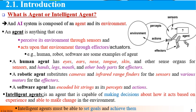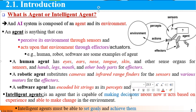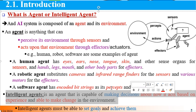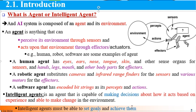An intelligent agent is an agent that is capable of making decisions based on experience and is able to make changes in the environment. An intelligent agent must be able to set goals and achieve them, and to make effective changes in the environment.